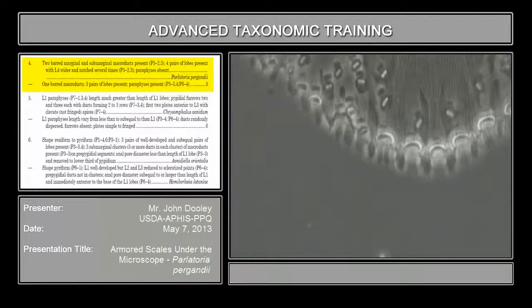There are four pairs of lobes present with the L4, lobe 4, wider and notched several times, and what they call parafysis absent. Parafysis, in my earlier talk, are elongate structures that start at the margin and may be shorter than the length of the medium lobes or longer than the length of the medium lobes, and they go up toward the medium. These have no parafysis. These things are actually just sclerotization connecting the lobes and has something to do also with maybe the micro ducts. The parafysis, you'll see them later, but they're absent on this. So they are absent.